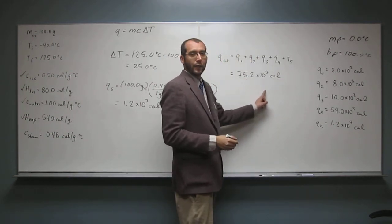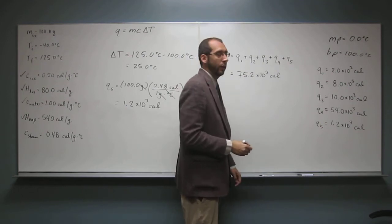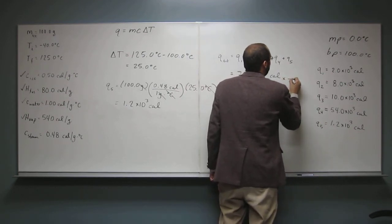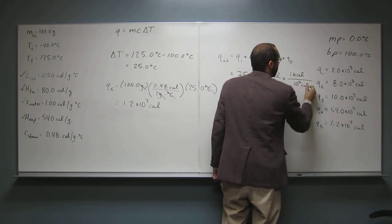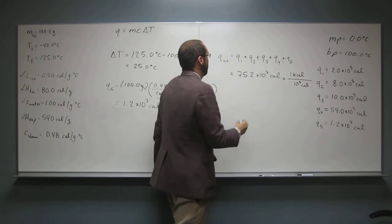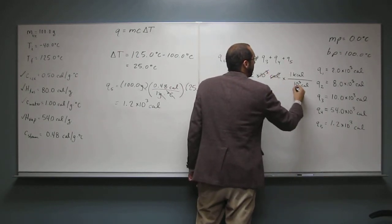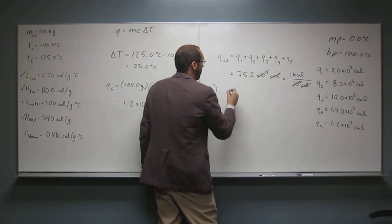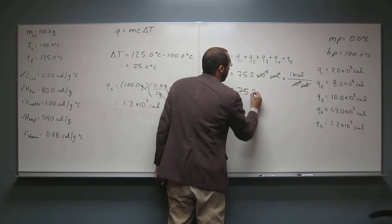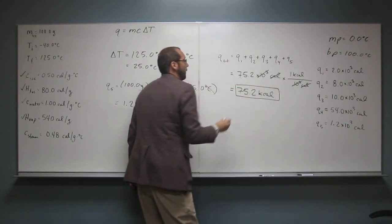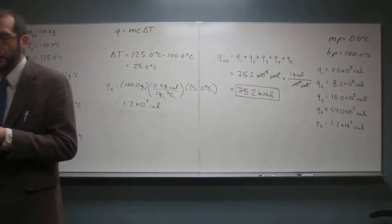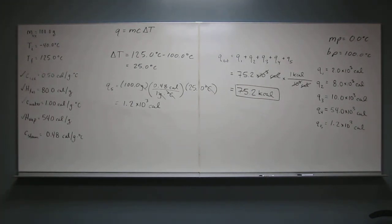Let's convert that into a better unit — kilocalories. Since 1 kcal = 1,000 calories = 10³ calories, we cancel and get 75.2 kcal of energy. That's how you do this problem. It's a long problem, but very logical in how you approach it step by step.